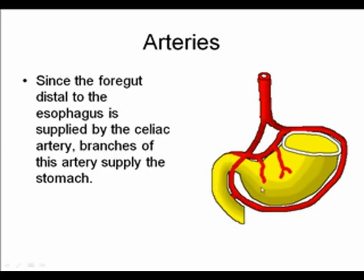The blood supply of the foregut comes from branches of the celiac artery. The celiac trunk gives rise to the arterial supply of all foregut structures, including the stomach.